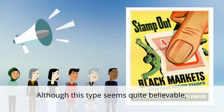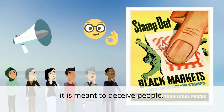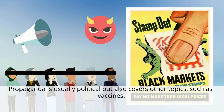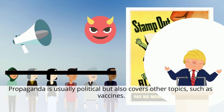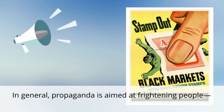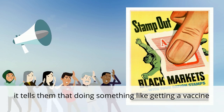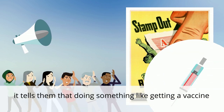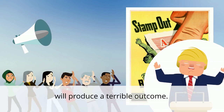Another common type of fake news is propaganda. Although this type seems quite believable, it is meant to deceive people. Propaganda is usually political, but also covers other topics such as vaccines. In general, propaganda is aimed at frightening people. It tells them that doing something like getting a vaccine or electing a particular politician will produce a terrible outcome.